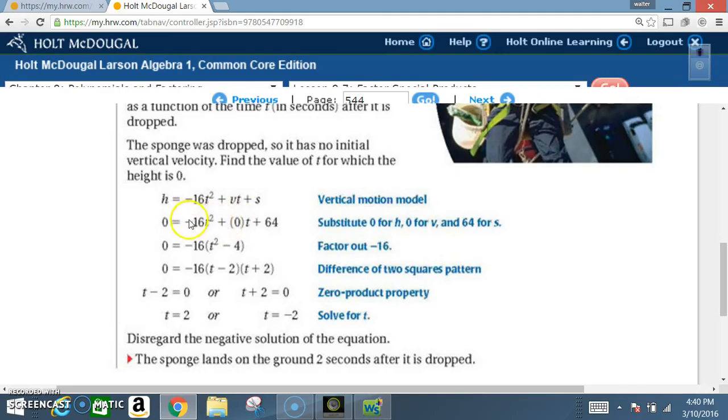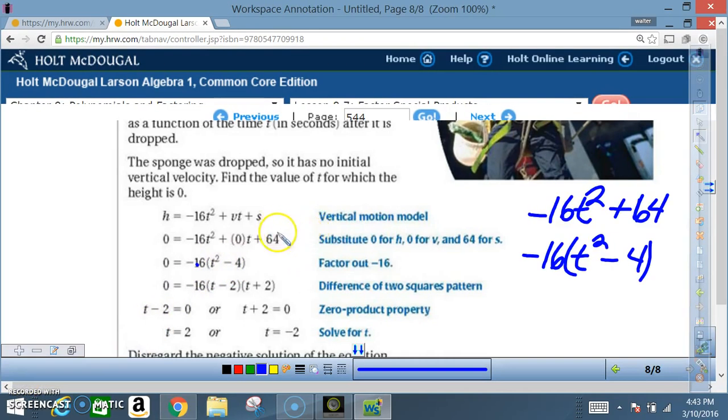So this is going to cancel out. And we're going to end up with negative 16 times t squared minus 4.